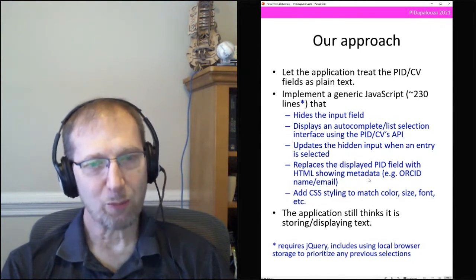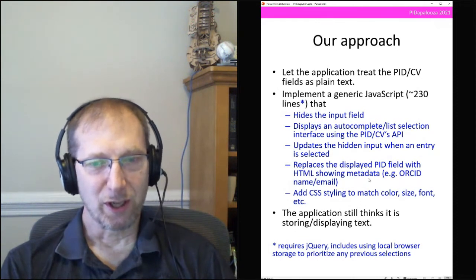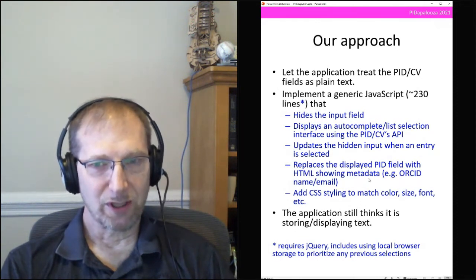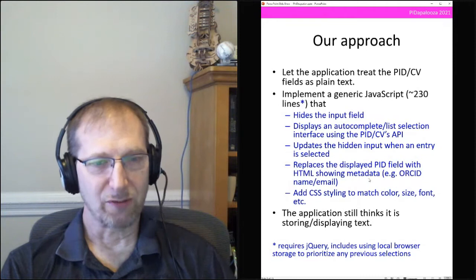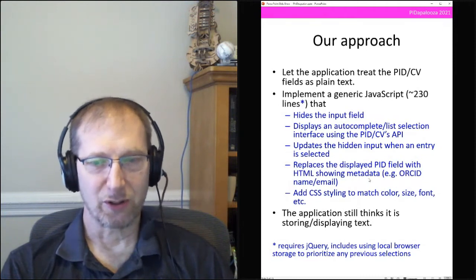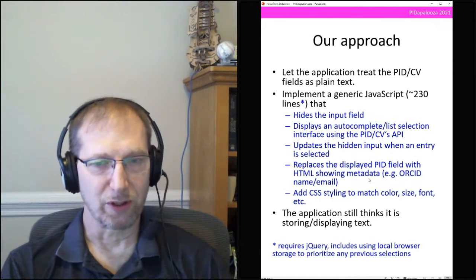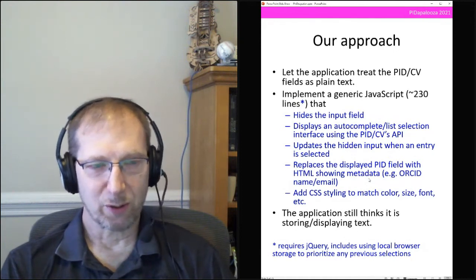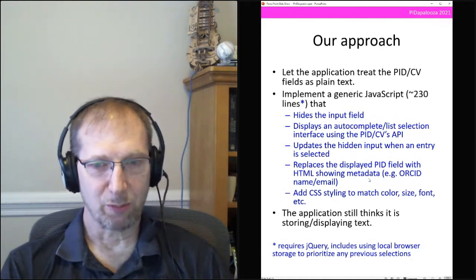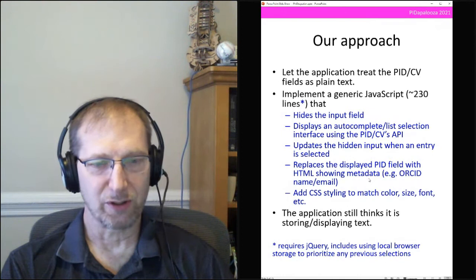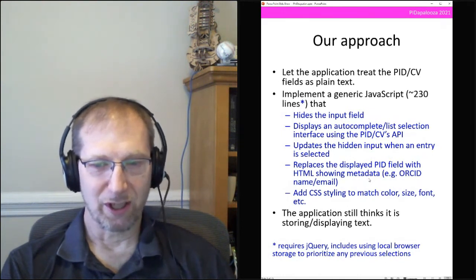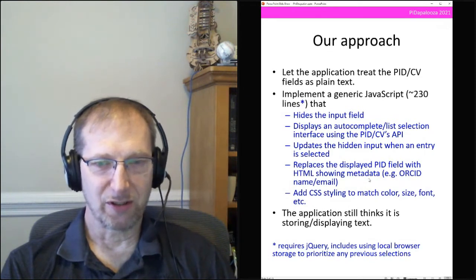The same thing on the output side: whenever that field is displayed, the JavaScript replaces it with HTML showing the name as a link to your ORCID page, with email or other details. The JavaScript exposes its rendered elements to CSS styling so you can match color, size, and font to fit your application. The key point is that the application doesn't know anything changed, and the JavaScript doesn't know anything about your application.